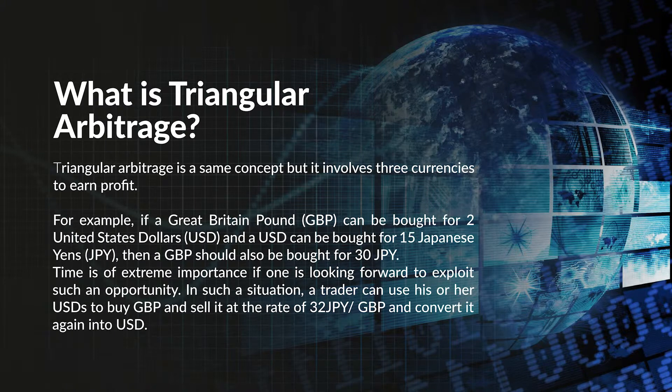For example, if a Great Britain pound, or GBP, can be bought for two United States dollars, or USD, and a USD can be bought for 15 Japanese yen, then a GBP should also be bought for 30 Japanese yen.